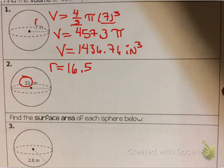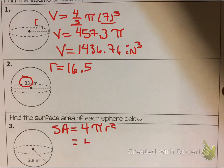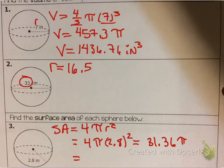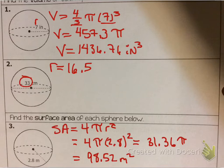Surface area is fairly easy — there is only surface area here, no lateral area, because there's no worry about bases or anything like that. Surface area of a sphere is 4πr². So here I'm going to say 4 times π times 2.8 squared. 4 times 2.8 squared gives 31.36π — and if I multiply by π I get 98.52 square units. When you multiply by π, that π symbol disappears because π is just a number.